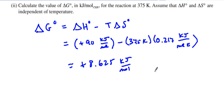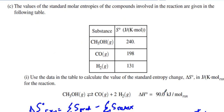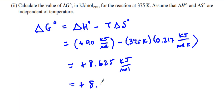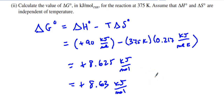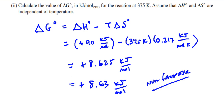Rounding to three significant digits, that gives positive 8.63 kJ/mol. You can see that ΔG is positive — what does that mean? It means it is not favorable. It is a thermodynamically non-favorable reaction, which means it will not proceed forward in terms of the equilibrium expression.